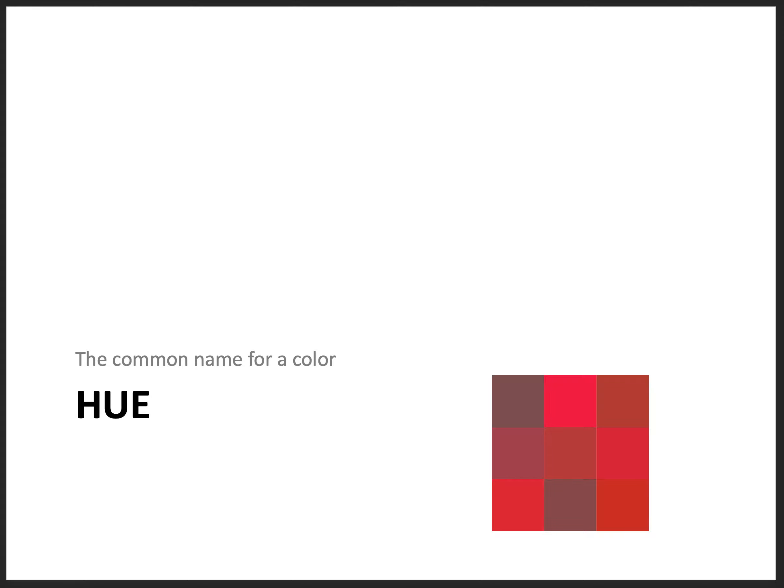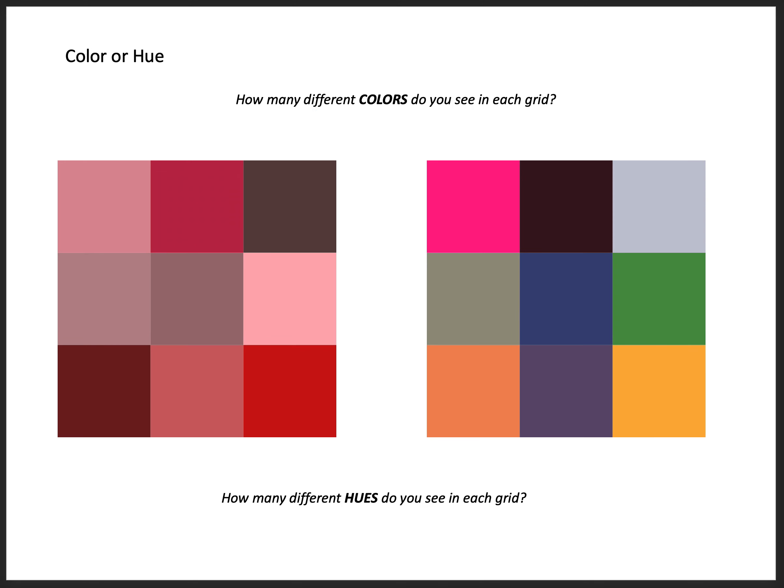Hue is defined as the common name for a color. Let's think about what is the difference between the word color and hue. As you look at these two grids, how many different colors do you see in each one? There are nine different colors in each grid. But when we ask how many different hues we see, the answer is different. We still see nine different hues in the grid on the right, but on the grid on the left, we see only one hue — all of those colors are made from red.